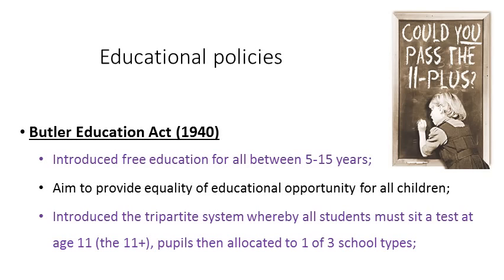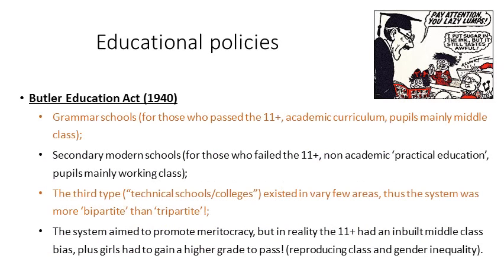The Butler Act also introduced what was known as the tripartite system — the three-part system — whereby all students must sit a test at the age of eleven, known as the eleven-plus. Based on the outcome of those tests, pupils would be allocated to one of three school types. The first type were grammar schools, for those students who passed the eleven-plus and were therefore seen as bright and intelligent. They received an academic curriculum, were taught by middle-class university graduate teachers, and tended to come from middle-class backgrounds. This was a way for middle-class parents to have their children receive almost a private school quality education, but on the state's dime.